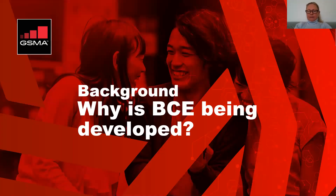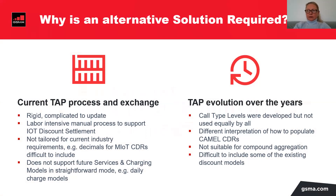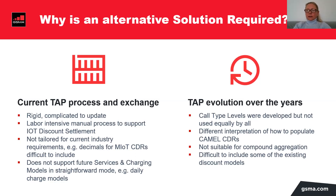So why is BCE being developed? The current TAP process and exchange is very cumbersome. There are daily exchanges of TAP files on CDR level. The TAP format is rigid and complicated to update. It's labor intensive and a manual process to support the current IoT models. It's not tailored for new industry developments, there are not enough decimal places, it does not support future services and charging models, and even though we have developed call type levels, they are not being used efficiently — especially not call type level 3. There are different interpretations on how to populate CAMO CDRs, it does not support compound aggregation, and it is difficult — even impossible — to include some of the existing discount models.